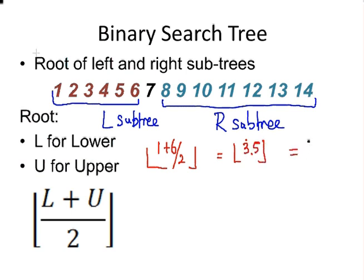So, this here is the root of that sub-tree. Let's do the other one. 8 plus 14 all over 2. That is simply 22 over 2. That's the floor of 11. That's the floor function there. And that's simply 11.